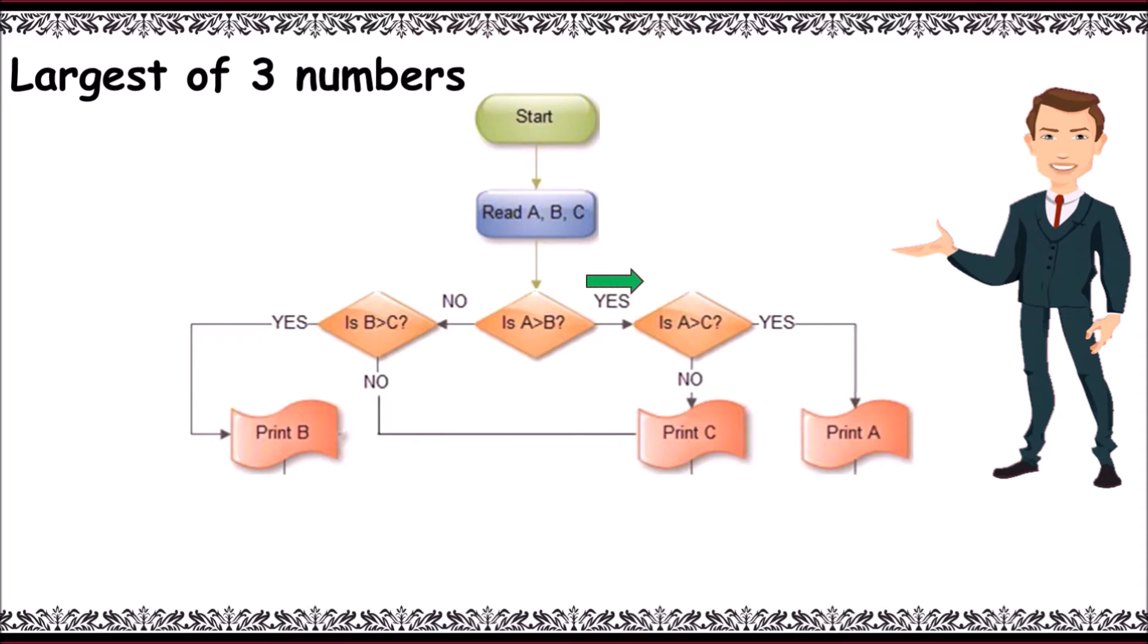If it's true, check a greater than c. If it is also true, then print a. Now if a greater than c is false, you can directly print c.